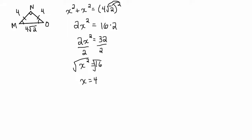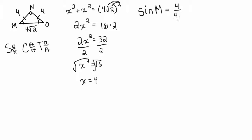Now we're going to get the sine, cosine, and tangent of each acute angle. Let's start with the sine of angle M. Remember SOHCAHTOA — opposite over hypotenuse. Opposite is 4, hypotenuse is 4 root 2, so it's 4 over 4 root 2, which simplifies to 1 over root 2. Rationalize by multiplying by root 2 over root 2, and you end up with root 2 over 2.